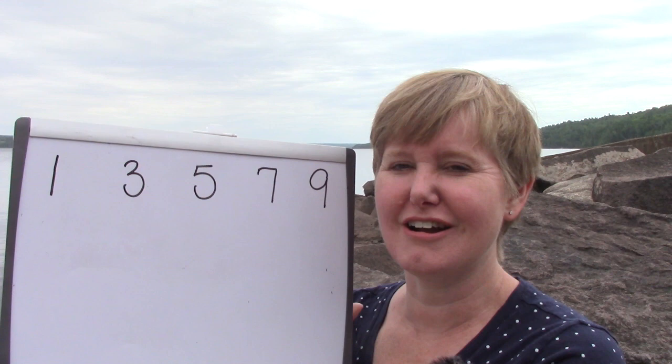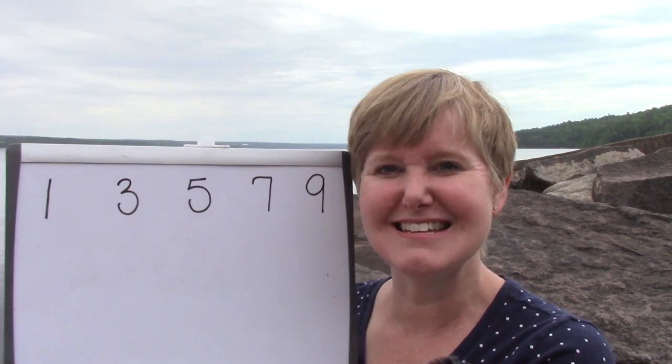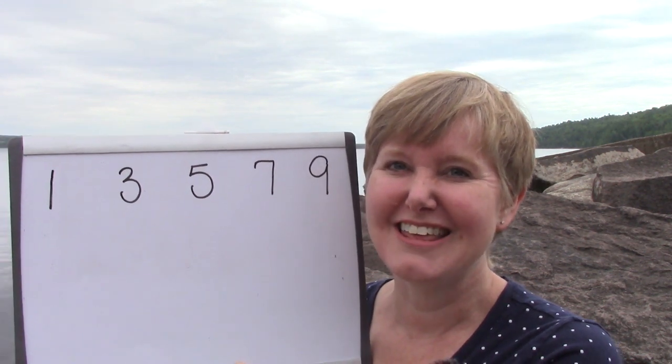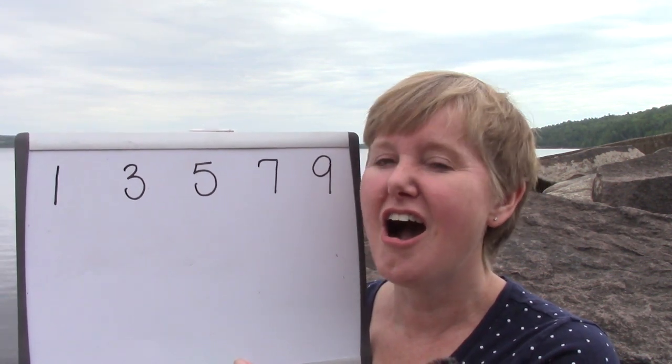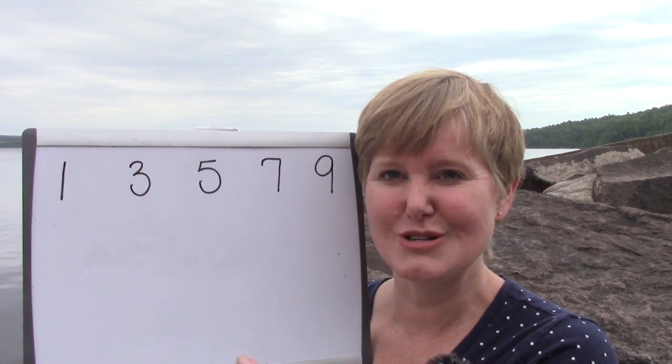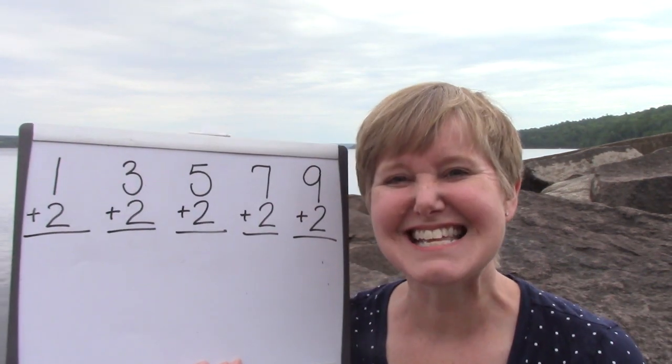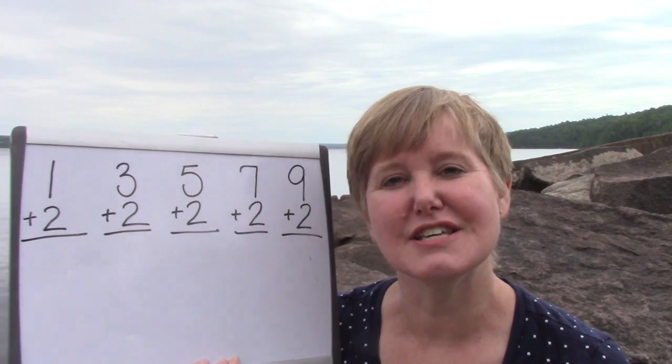All right, my dog interrupted us there — I hope he wasn't too loud. I have some more numbers here: one, three, five, seven, and nine. Do you remember what those numbers are called? You're right, they are odd numbers. What happens if we add the number two to an odd number? I'm going to write them down so it's a little bit easier. Let's add two to all of these odd numbers.